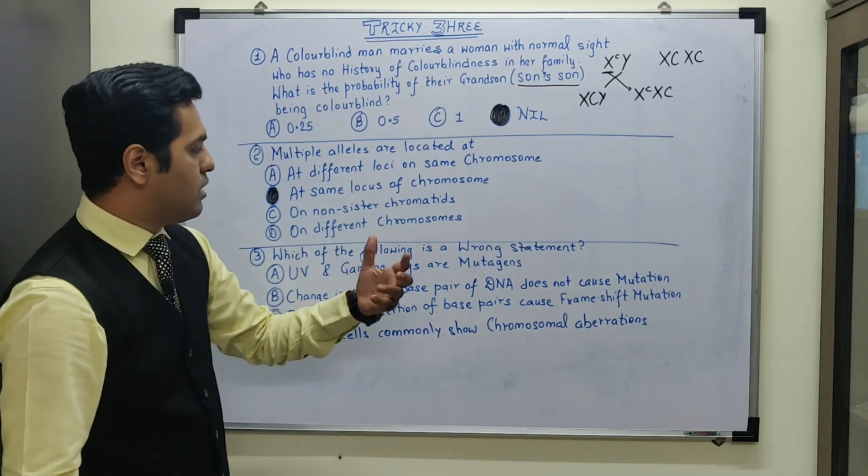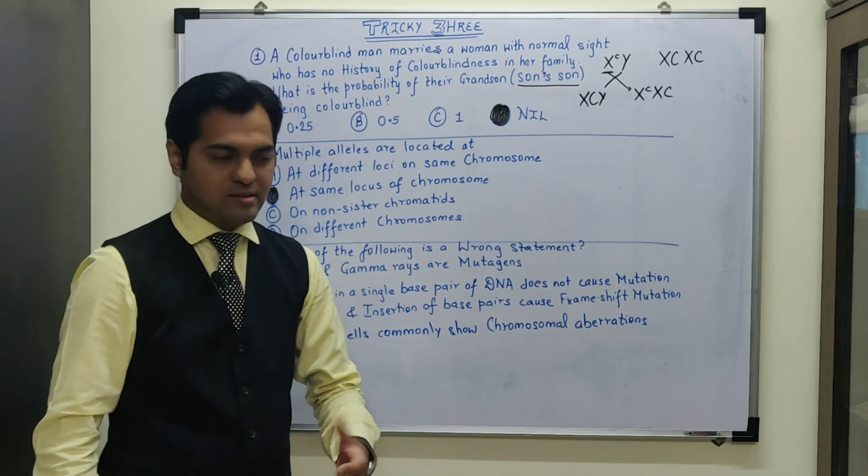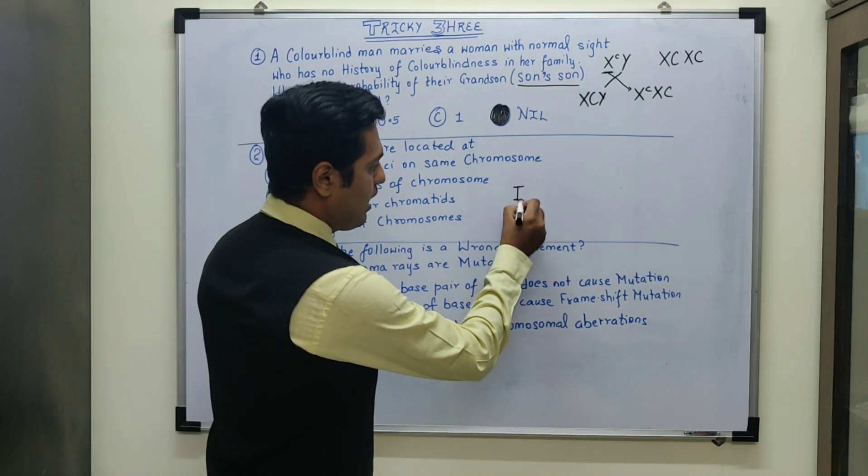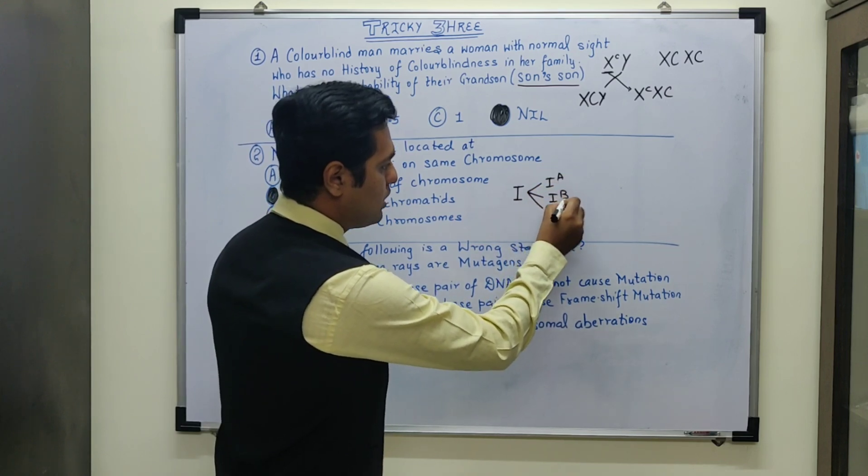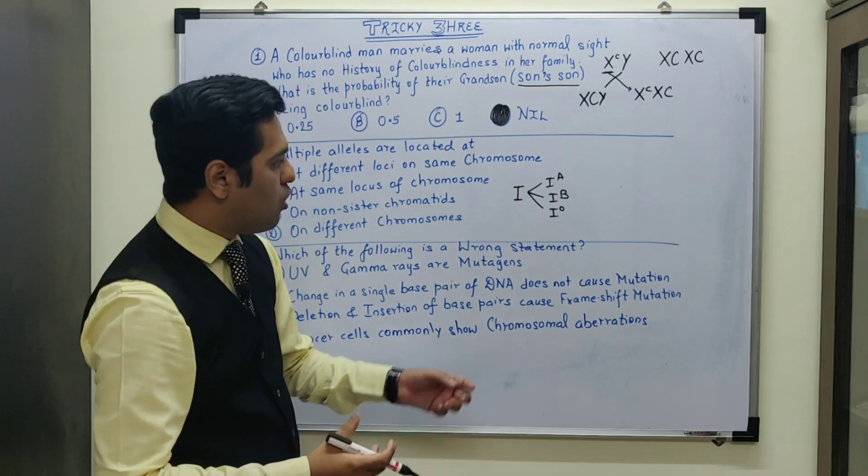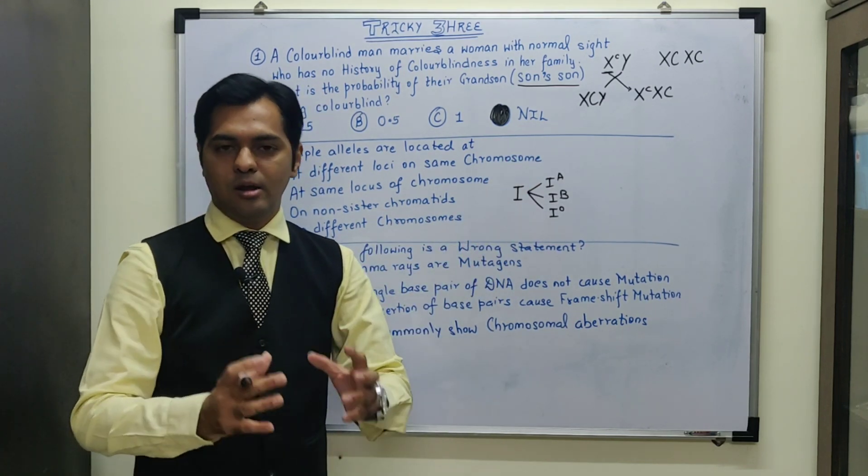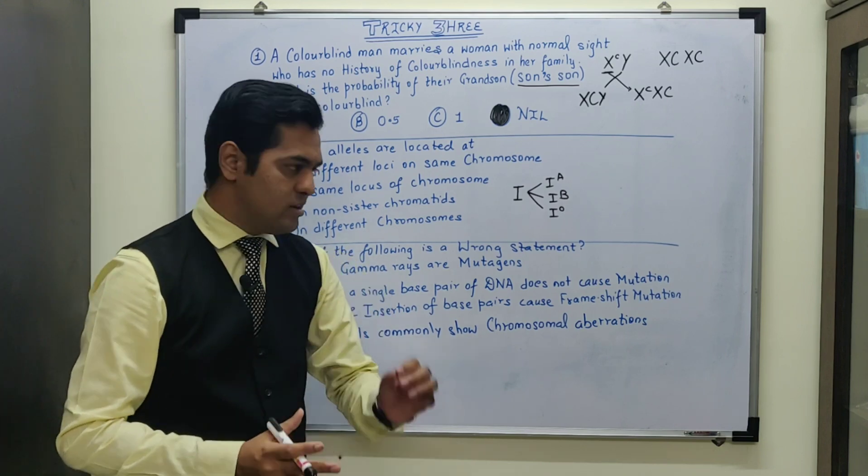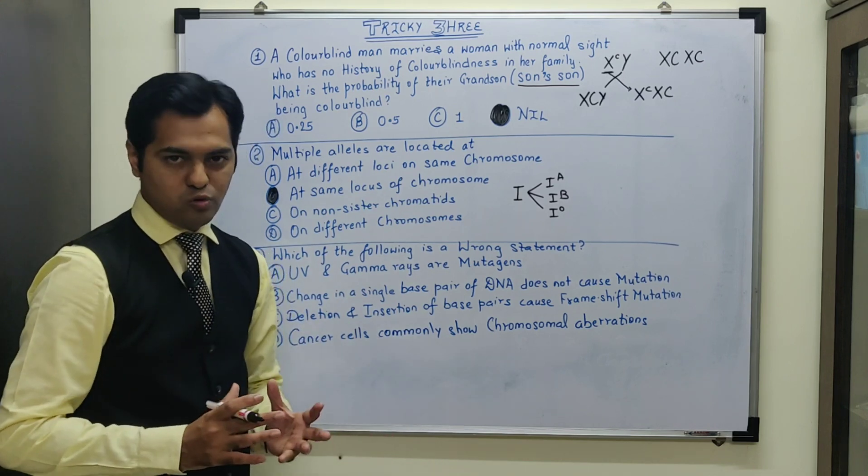We have been studying certain concepts of multiple alleles where human blood group is an example where gene I has multiple alleles like I raised to A, I raised to B, and I raised to zero or we denote it as small i. So out of these three multiple alleles, any two can come in double dose. But they will essentially occupy the same locus of a particular homologous chromosome.